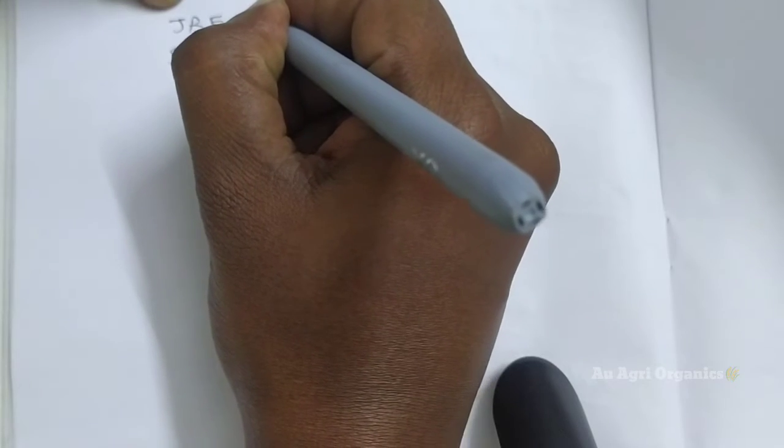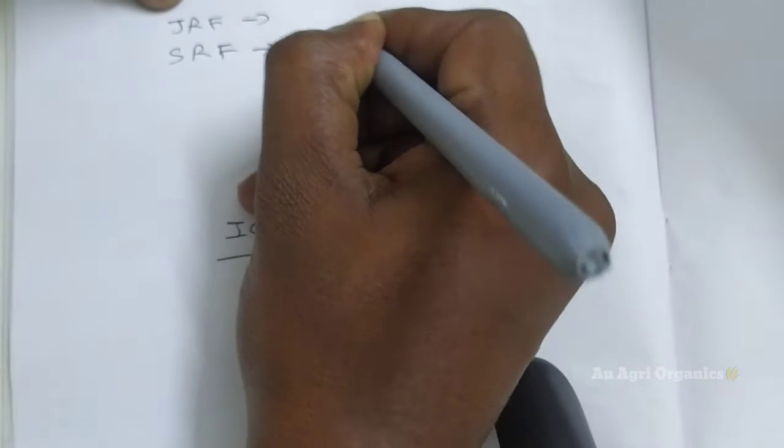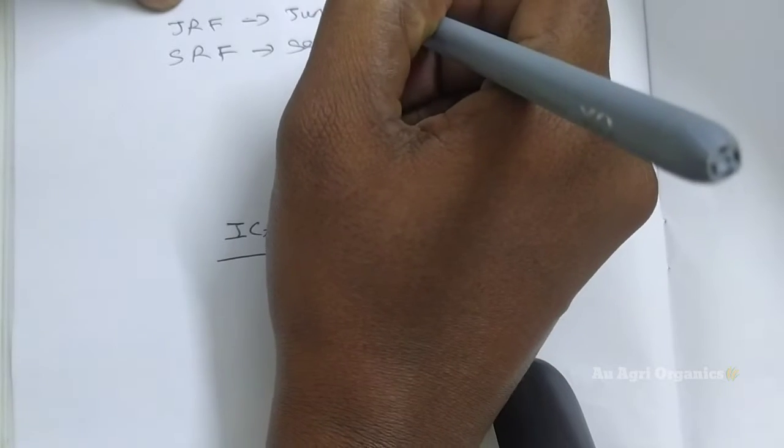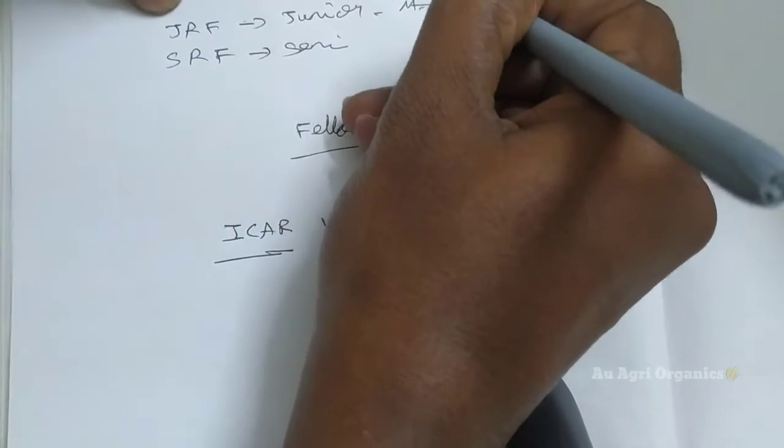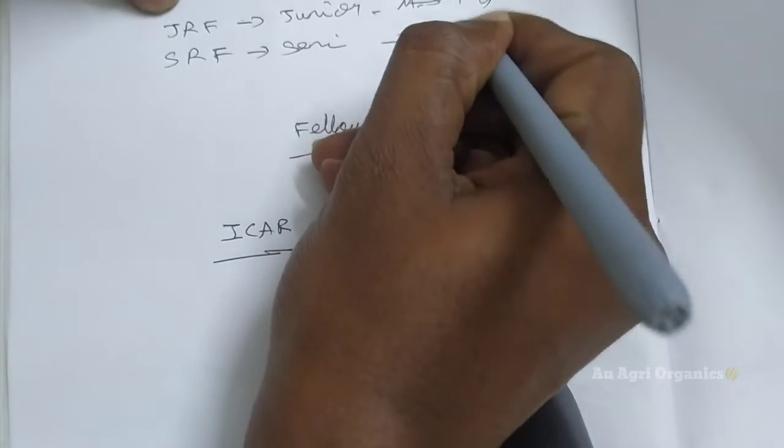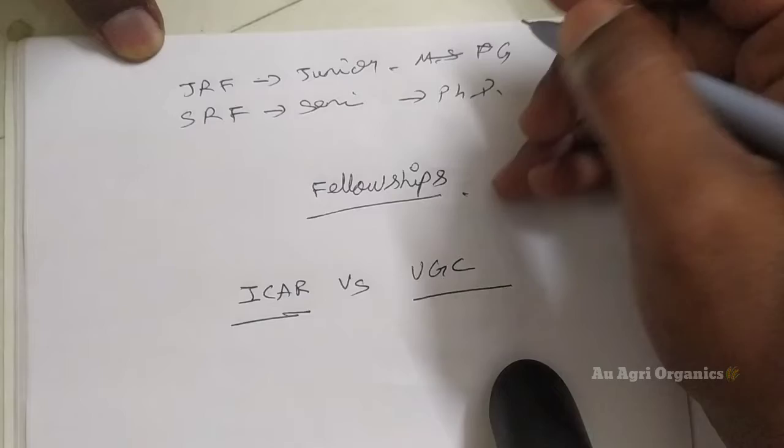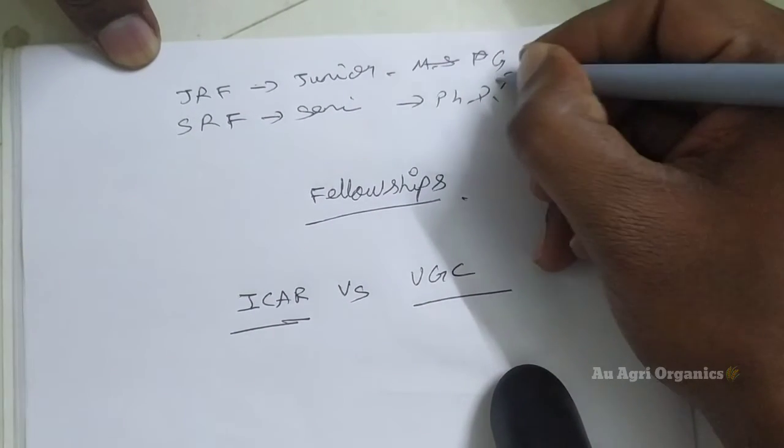First, JRF means Junior Research Fellowship. Next is SRF means Senior Research Fellowship. You may think that this Junior Research Fellowship is for MSc students, that is for PG students, this may be for PhD student. But this is entirely wrong. So this JRF is for PhD student and SRF is also for PhD student.